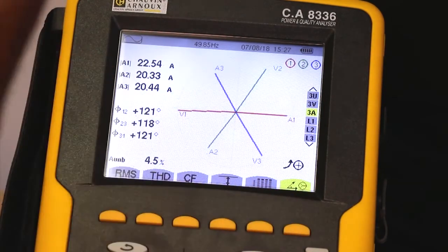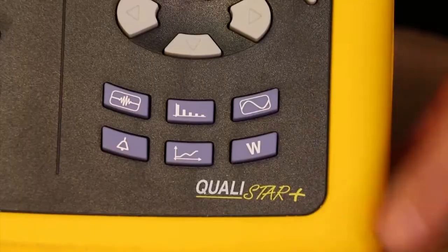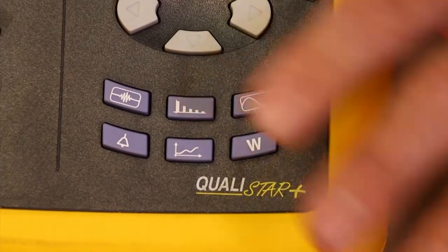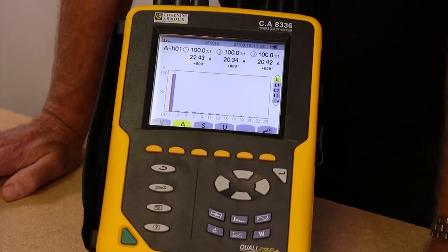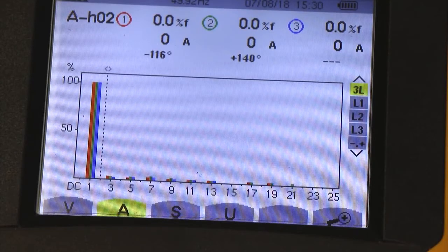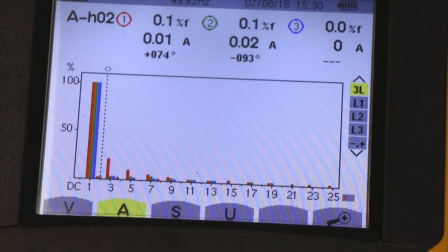The last button takes us to a vector diagram. The next mode key here shows you the actual quantity of each of the harmonics. And if I were to add some harmonics to the waveform we're looking at, you'll see the values increase.